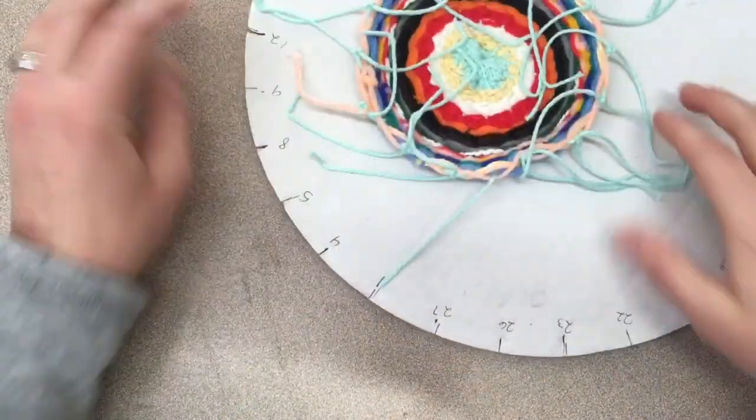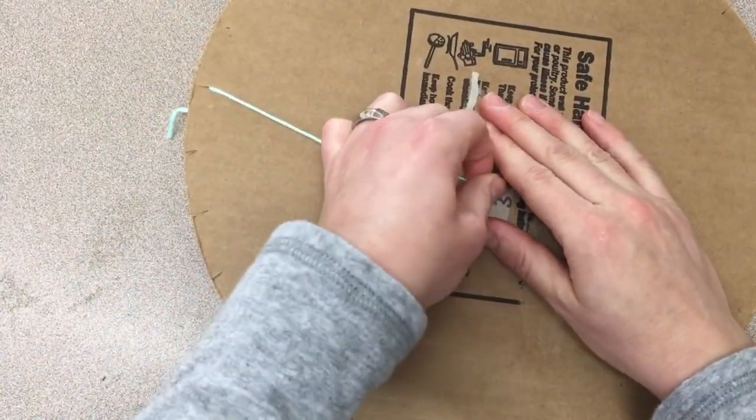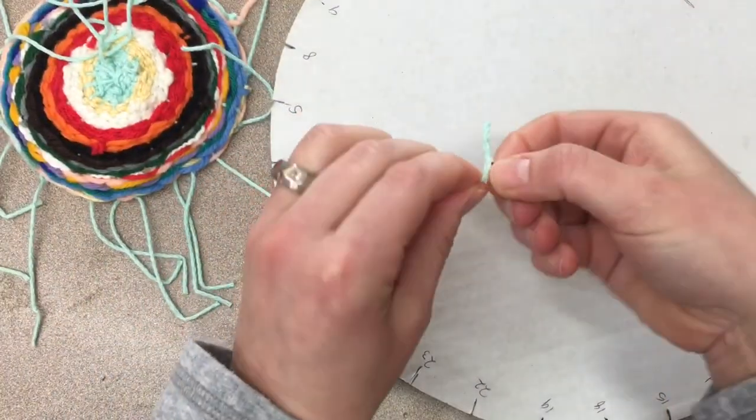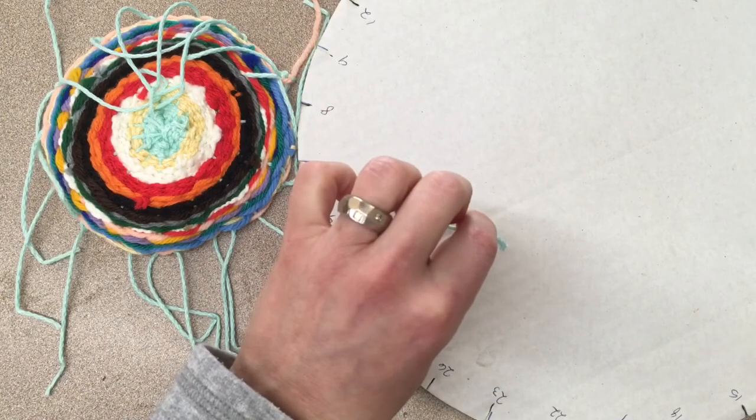When you get to the last one, the one that is taped on the back, you are going to carefully untape that. Any tape that's on there, peel it off, throw it away. You could also trim this end if that makes it easier.